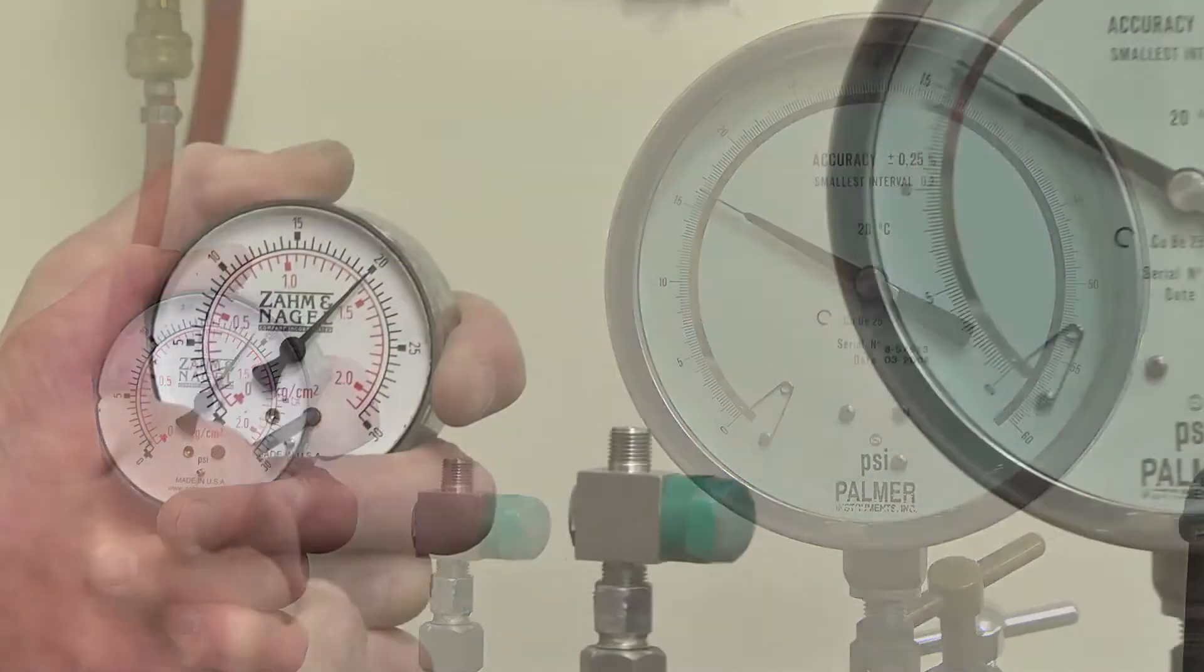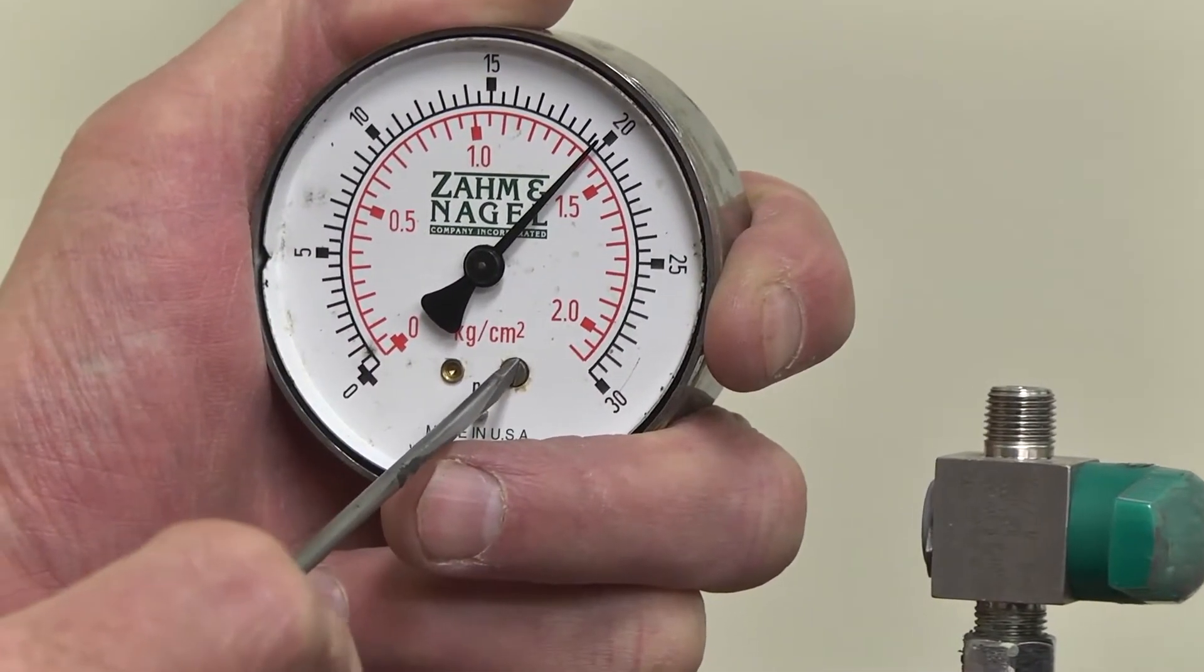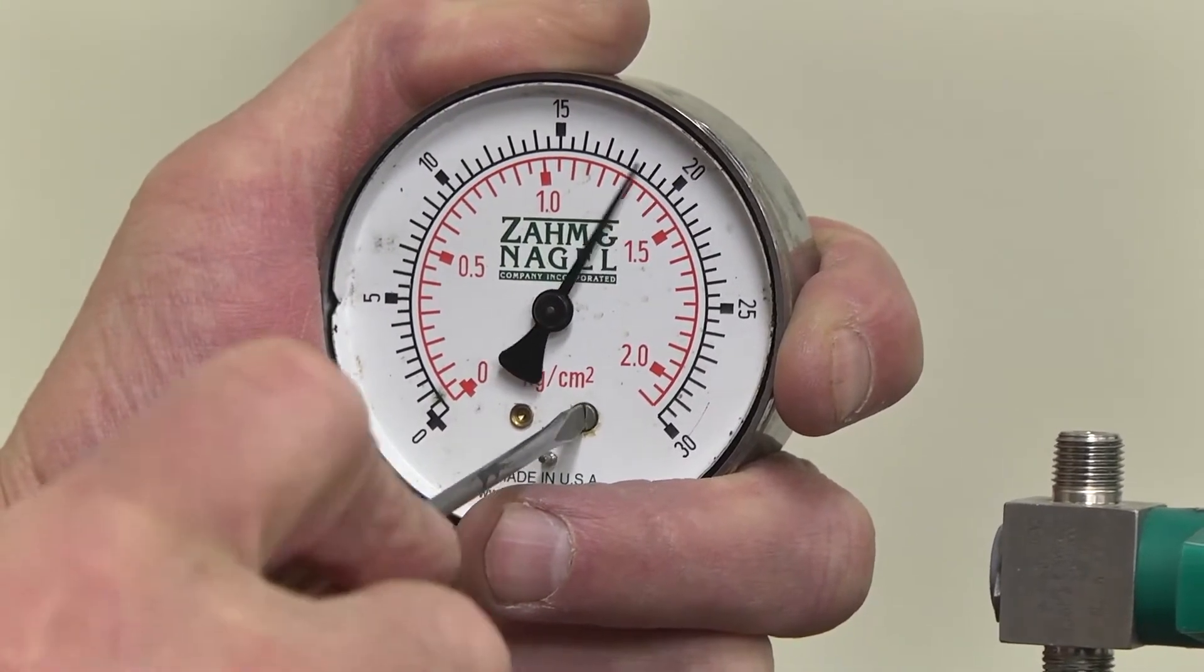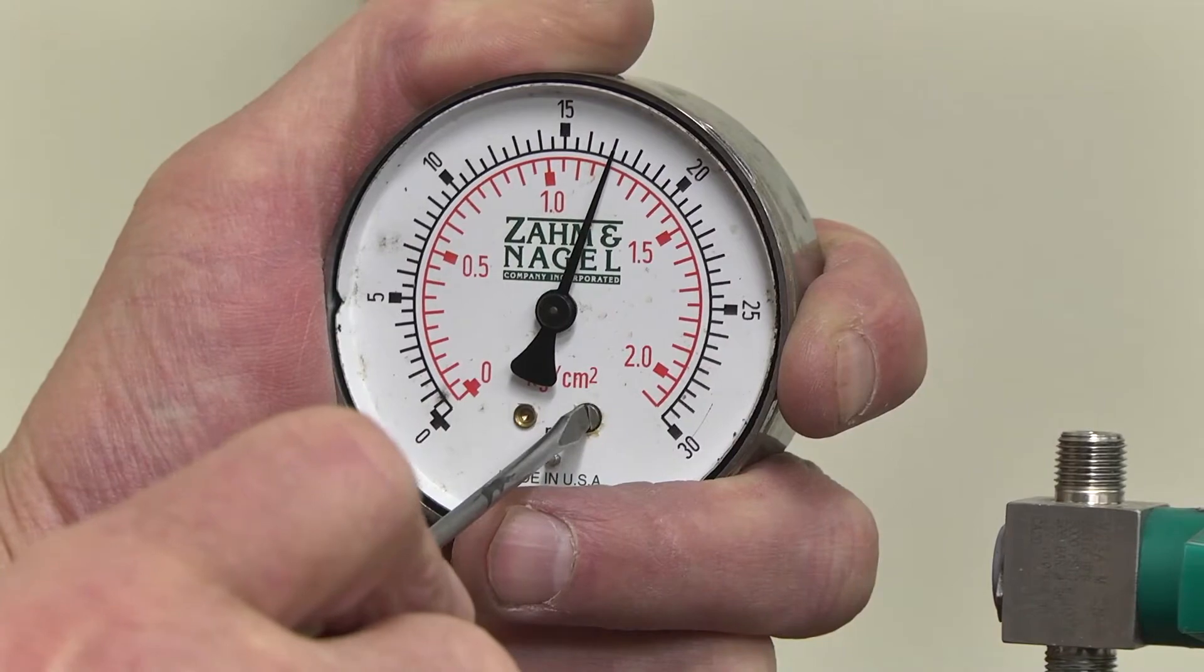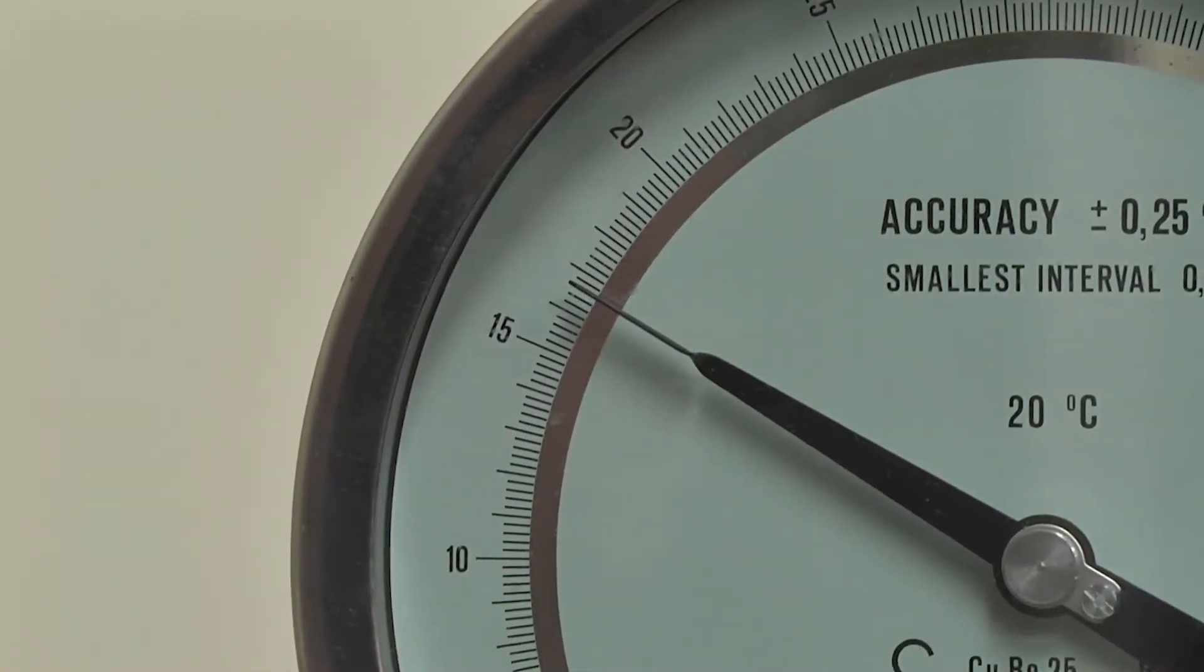Insert a slotted screwdriver in the brass screw located on the lower right hand side of the gauge face. Turn the screw clockwise to move the pointer up the scale and counterclockwise to move the pointer down the scale until it matches the reading on the test gauge.